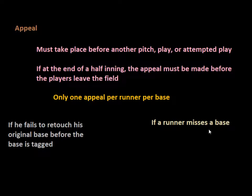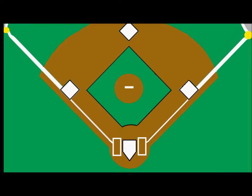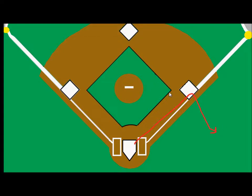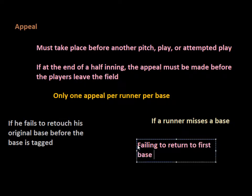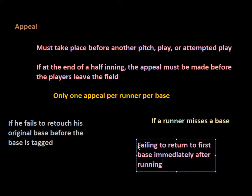The third way is something we mentioned before: if the runner hits the ball and runs through, there's a close play at first base. He runs through the base and doesn't return immediately. Maybe there was confusion — he thought he was called out on the play, but actually he was safe, so he goes back into the dugout. In this situation, the team can either tag him out or they can get the ball, step on first, and appeal the play. This is failing to return to first base immediately after running through the base.